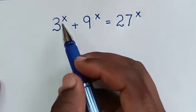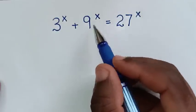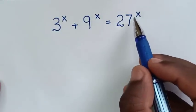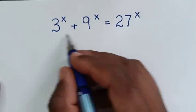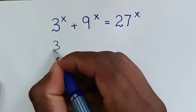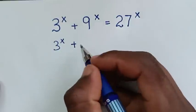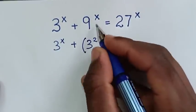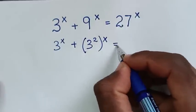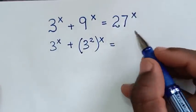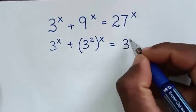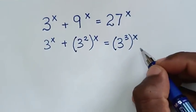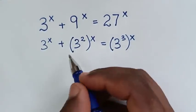In the first step, we rewrite the bases as powers of 3. Here 3^x stays as is. Then 9^x becomes (3²)^x, and 27^x becomes (3³)^x. So the equation becomes 3^x plus (3²)^x is equal to (3³)^x.